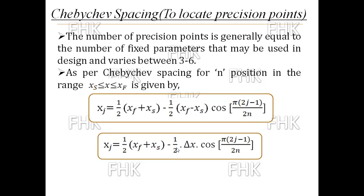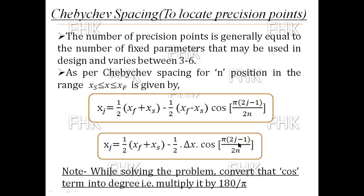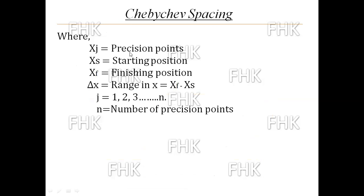For solving numericals in the examination, you have to remember this Chebyshev spacing formula, as it is not provided in the exam. One important point: the cosine term — π(2j − 1)/2n — must be converted into degrees by multiplying by 180/π, so that pi cancels and you get the cosine of an angle in degrees. Here j is an integer value: 1, 2, 3, 4, 5, or 6. In the formula, x_j is the precision point, x_s is the starting position, x_f is the final position, Δx is the range (x_f − x_s), and j runs from 1 to n.